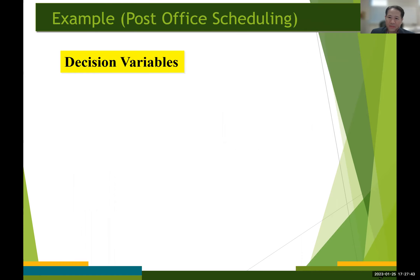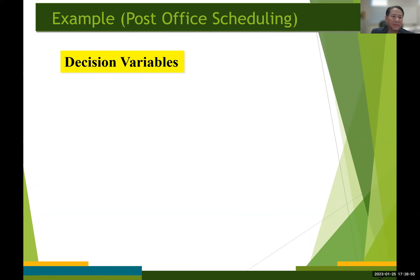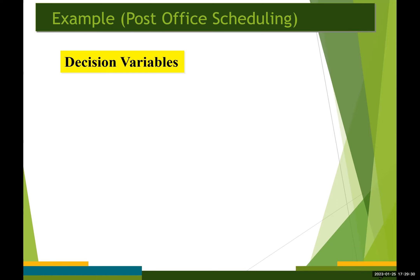As a user, we need to define the decision variables. Before giving the correct formulation of this problem, let's begin by discussing an incorrect formulation first. Some of you might begin by defining the decision variable to be the number of employees working on each day. Then the total number of full-time employees would be the number of employees working on each day of the week.